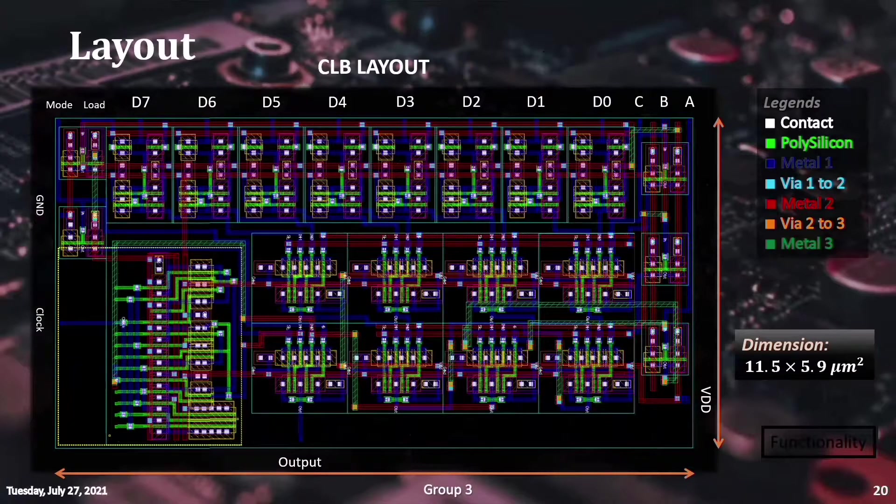Now we take a look at the final layout design of our CLB unit. In the layout, utmost care was taken to minimize the circuit area. The final layout uses up to metal 3 layers for the block interconnects and is housed inside an area of 11.5 micrometer height and 5.9 micrometer width.